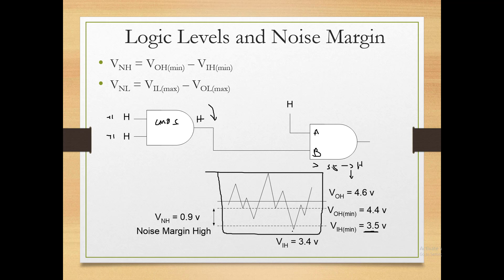If for a very short duration the input goes below 3.4V — which is less than the minimum logic high threshold of 3.5V — then the entire circuit will malfunction during that range. The output becomes unpredictable. The formula for calculating noise margin is: for logic high, VNH = VOH(min) − VIH(min); and for logic low, VNL = VIL(max) − VOL(max).